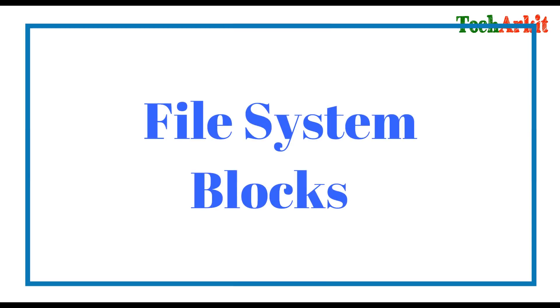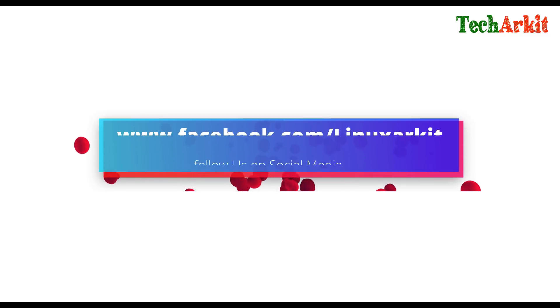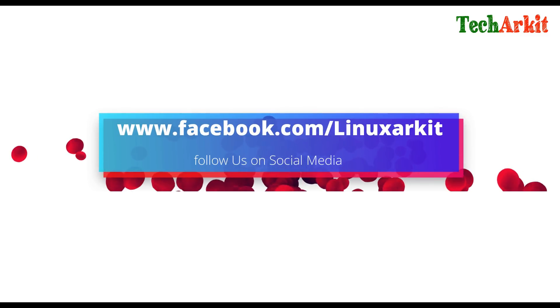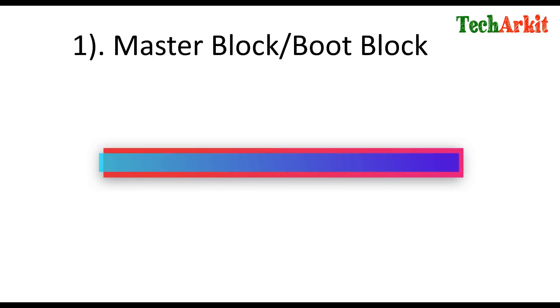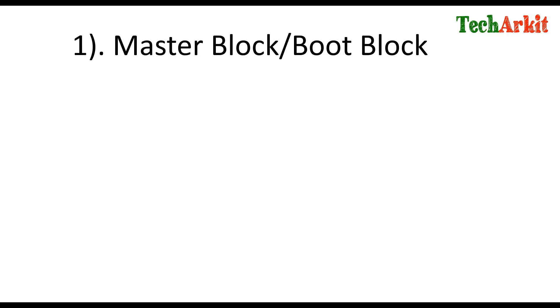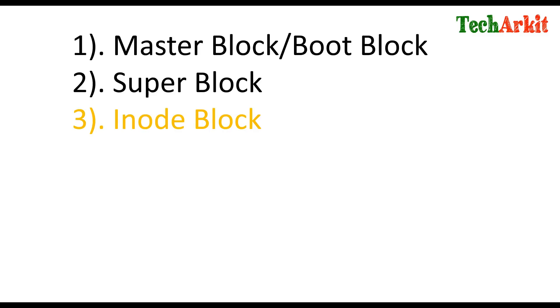Whenever you create any file system on a Linux machine, it will create a few block types. That is called the master block or boot block. The next one is the super block. The third one is the inode block, and the fourth one is the data block.